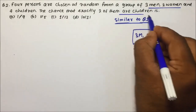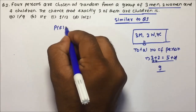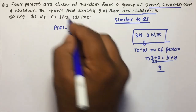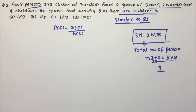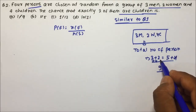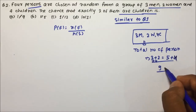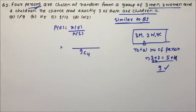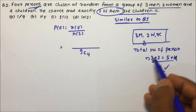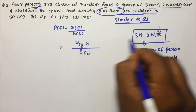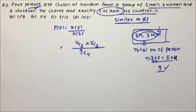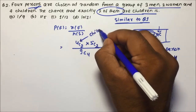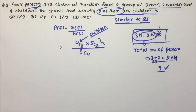The question asks for the chances that exactly 2 of them are children. Probability will be equal to Ne divided by Ns. Out of 9 persons, 4 are chosen at random, so Ns = 9C4. For favorable outcomes: you want exactly 2 children, so select 2 from the children (4C2), and the remaining 2 you select from men and women (5C2). The condition is only on the children; they want exactly 2 children and are not worried about men and women.